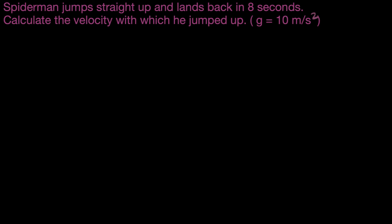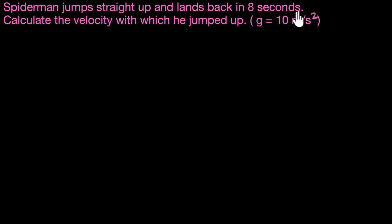Let's solve a couple of problems of objects in free fall when they're both going up and down. Here's the first example: Spider-Man jumps straight up and lands back in eight seconds. Calculate the velocity with which he jumped up, given G equals 10 meters per second squared.